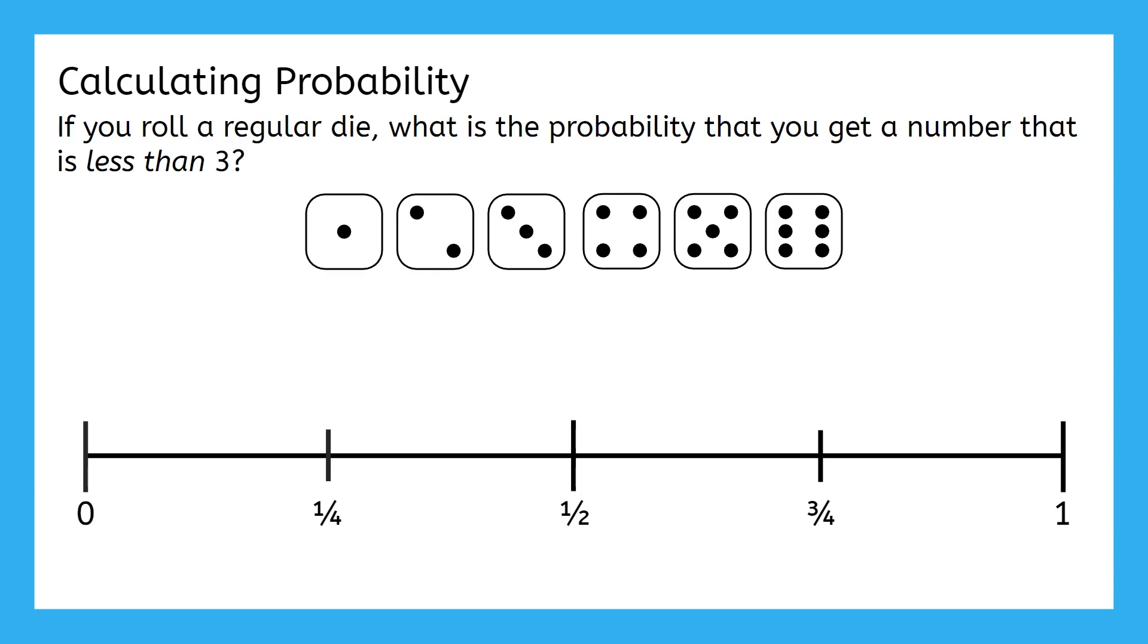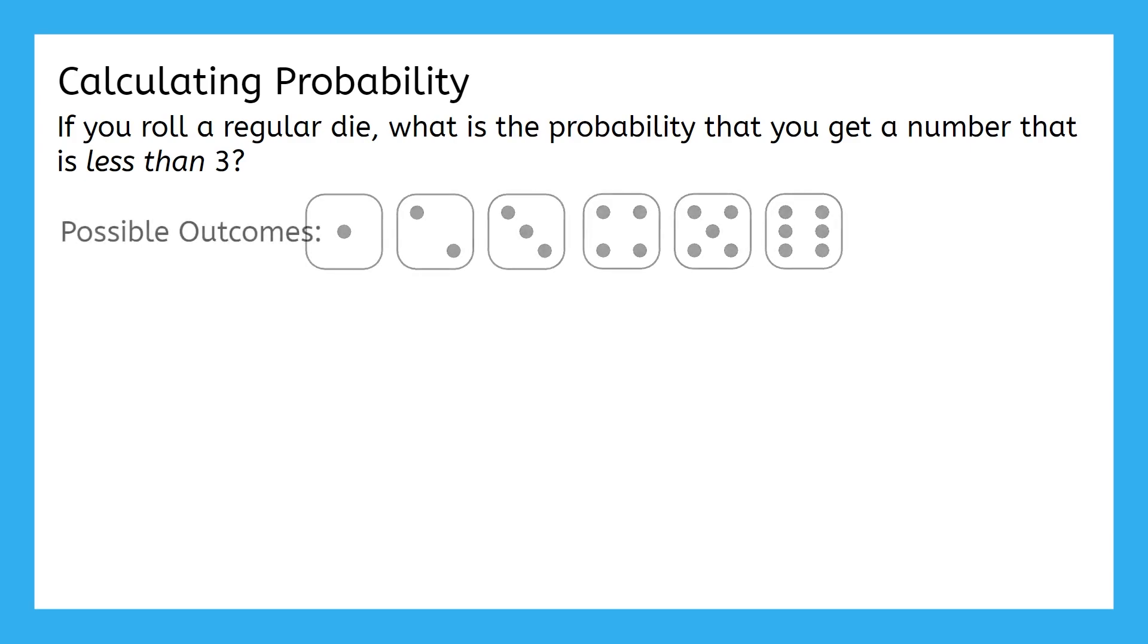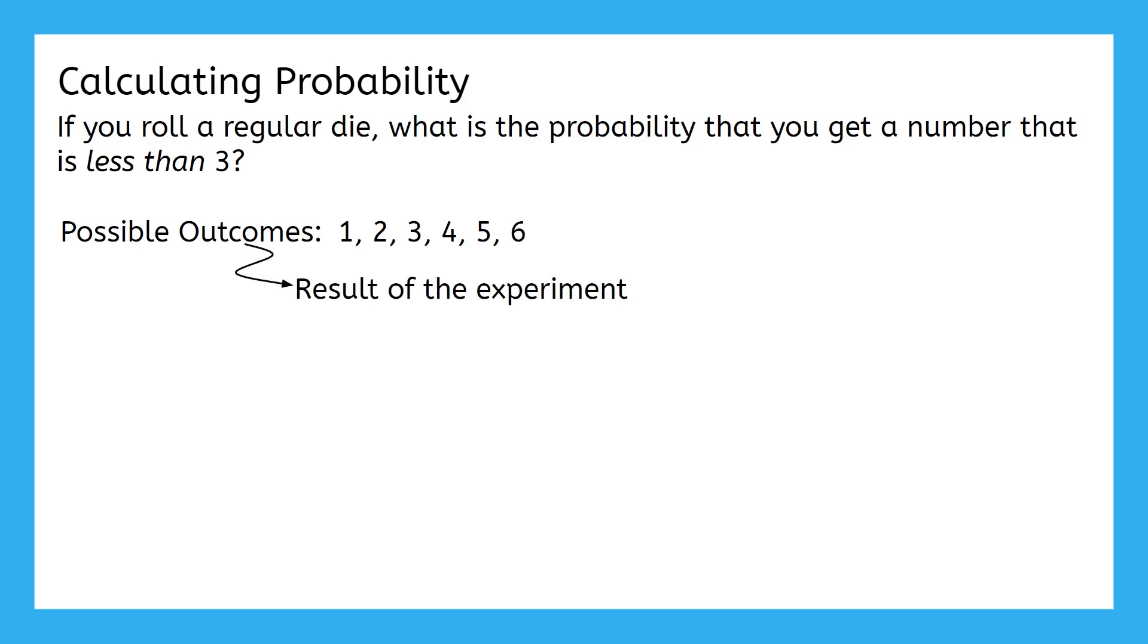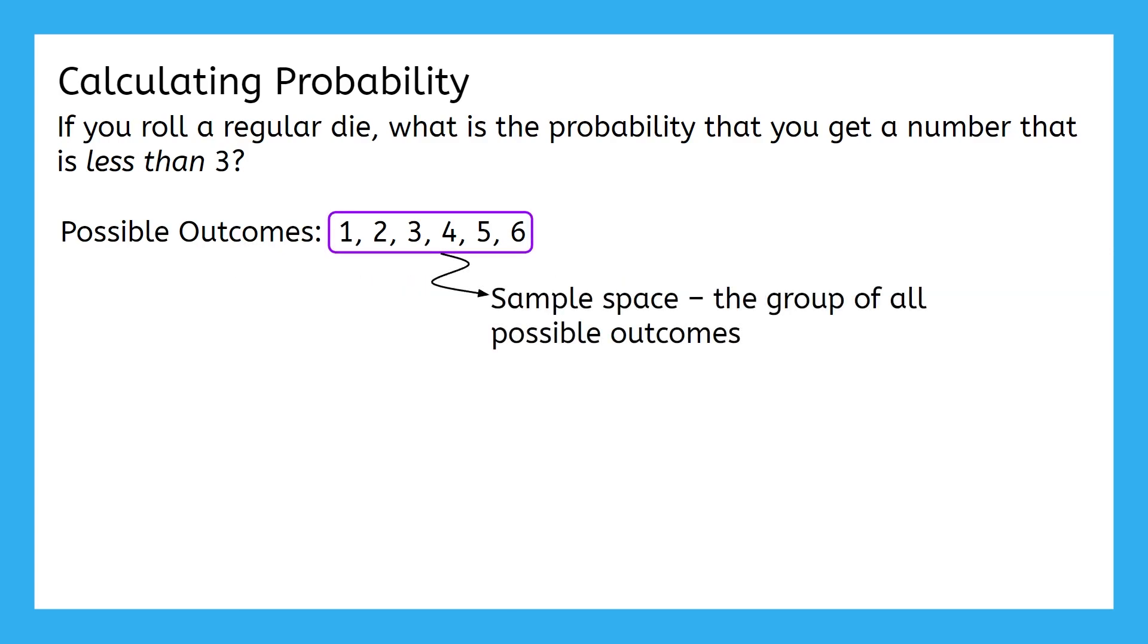Well, if I perform this experiment, that is, roll the dice, what are the possibilities for what I can get? Yep, I can roll a 1, 2, 3, 4, 5, or 6. Each of these possibilities is called an outcome, because it's something that can be a result of this experiment. This group, of all of the possible outcomes, is called the sample space.